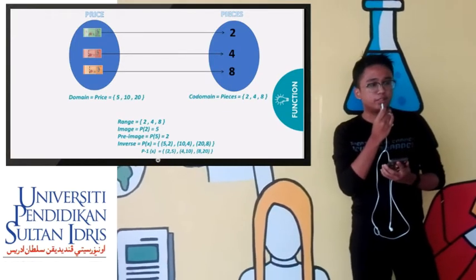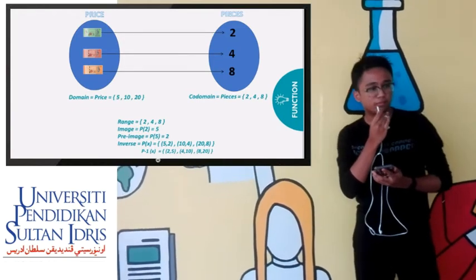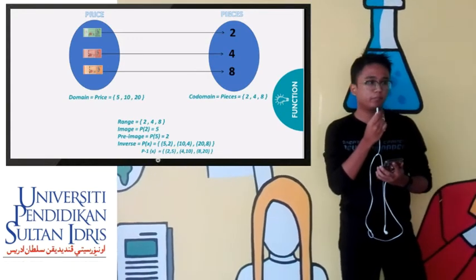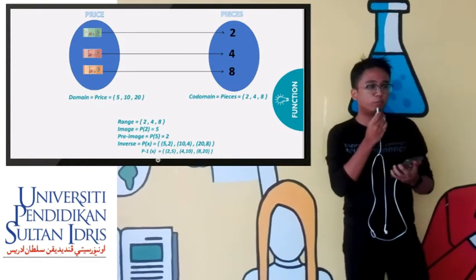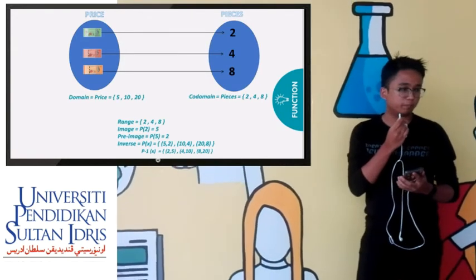In the diagram, it is the pieces, whether you get two, four, or eight. For the range, range is something that connects the input to the output. For this diagram, it is two, four, and eight.